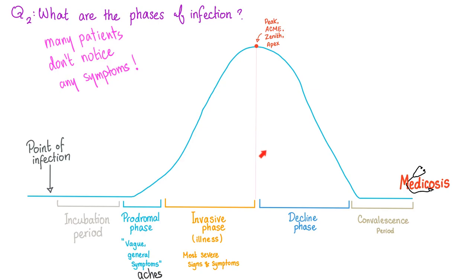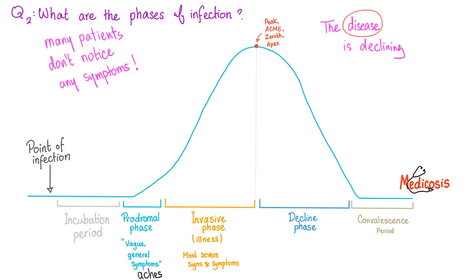After the invasive phase comes the decline phase, and then after that the convalescence phase. This point on the graph is the peak, apex, or zenith — not to be confused with the watchmaker company.